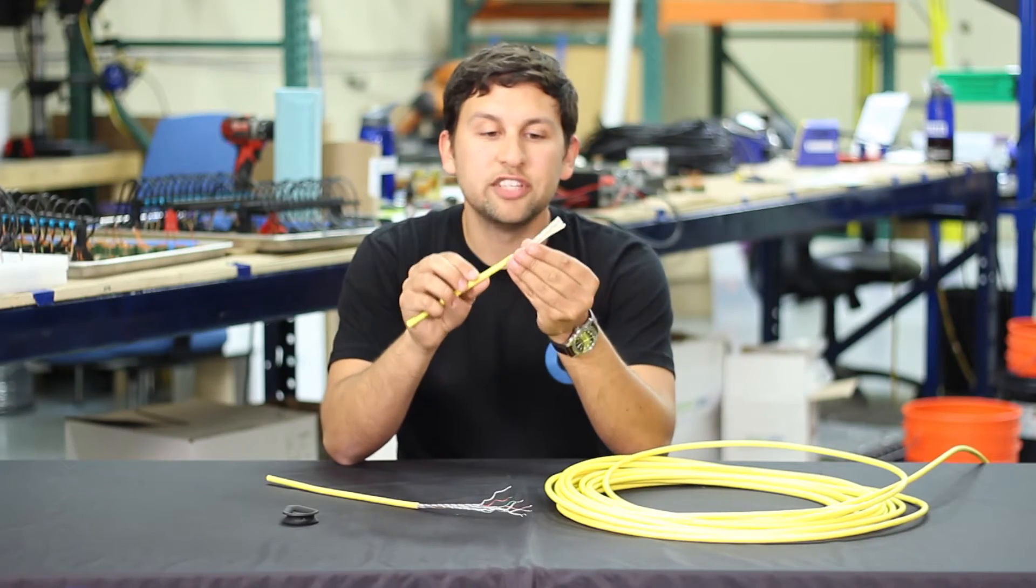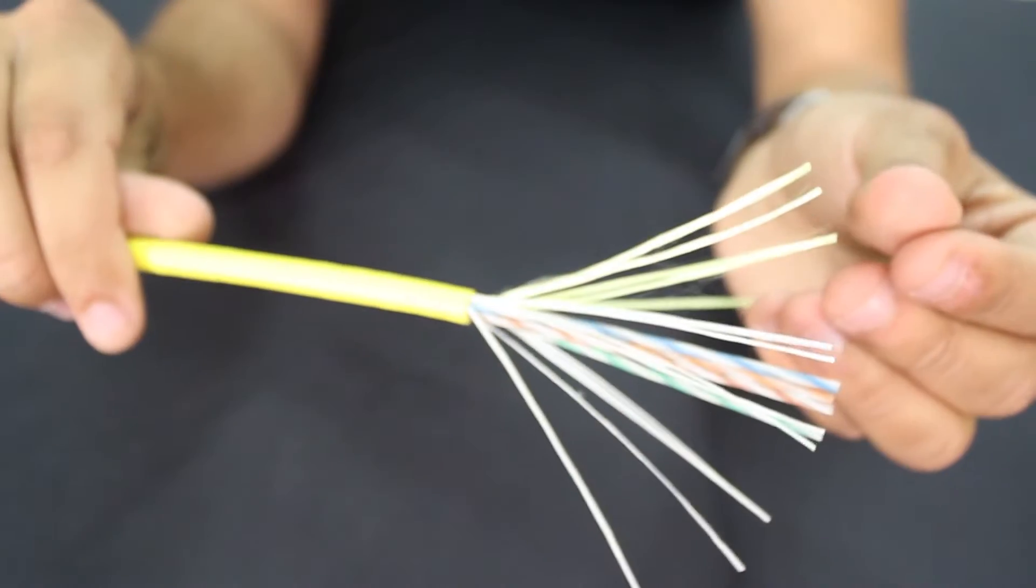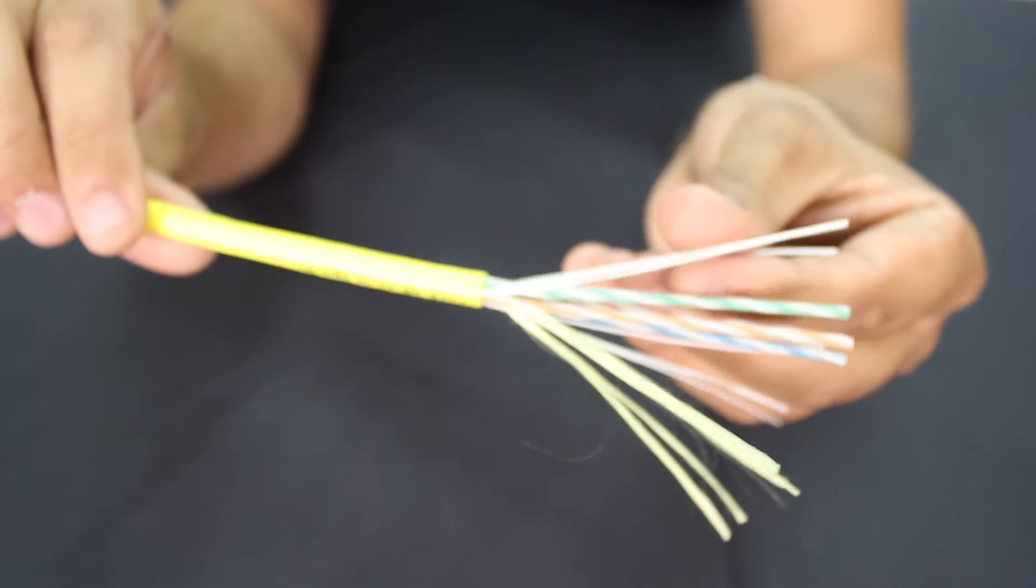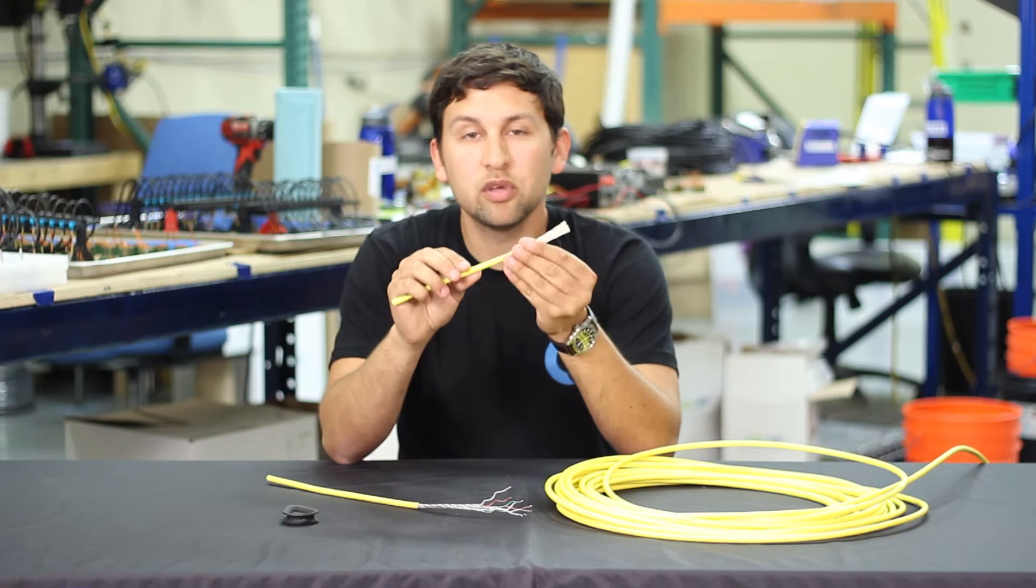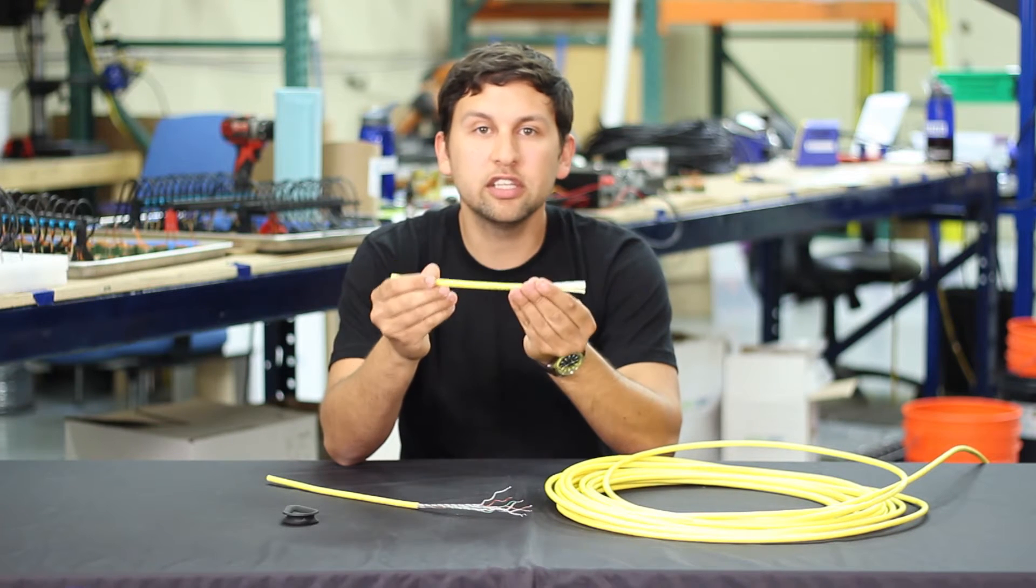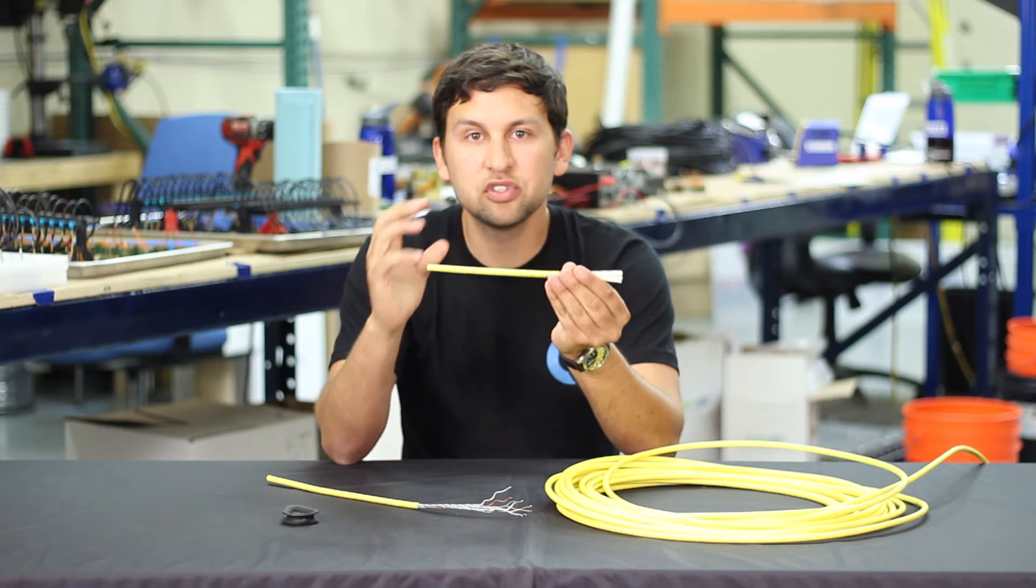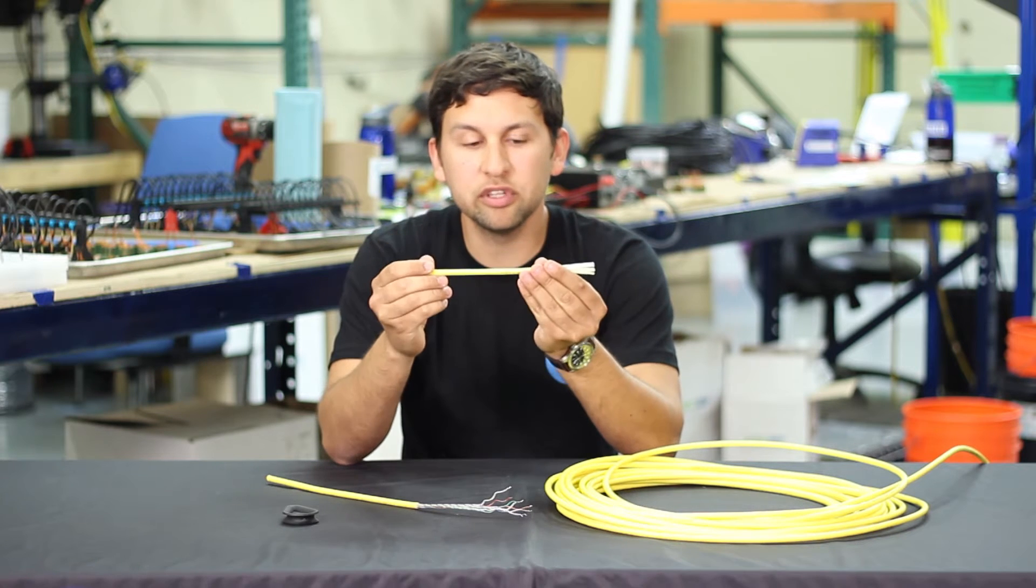In between the twisted pairs are Dacron filler fibers, and at the core of the cable are several strands of Kevlar for strength. Both of those fibers are impregnated with a water blocking compound, so that if the jacket gets cut at any point along the cable, those fibers will swell and prevent water from traveling through the cable.